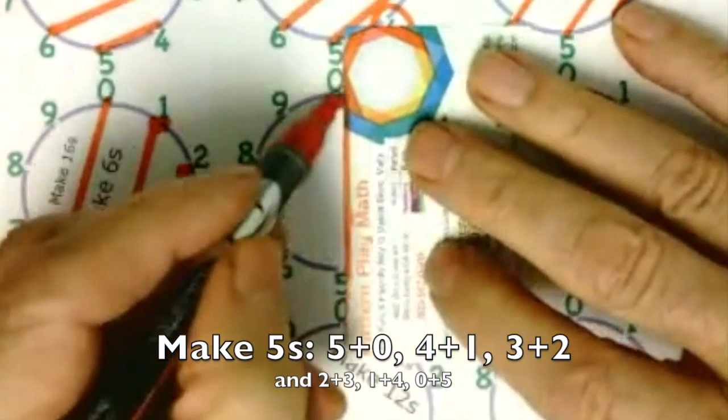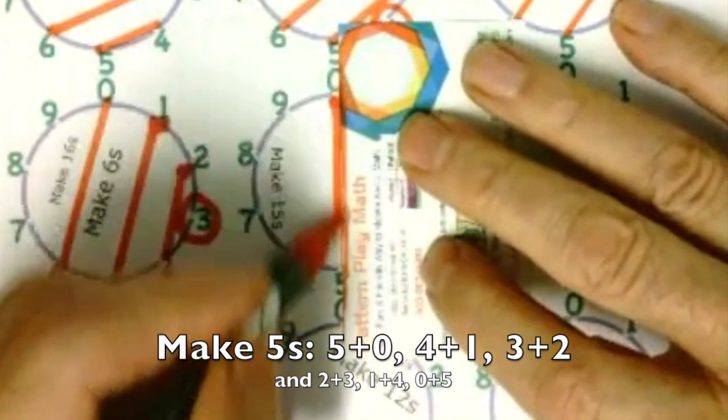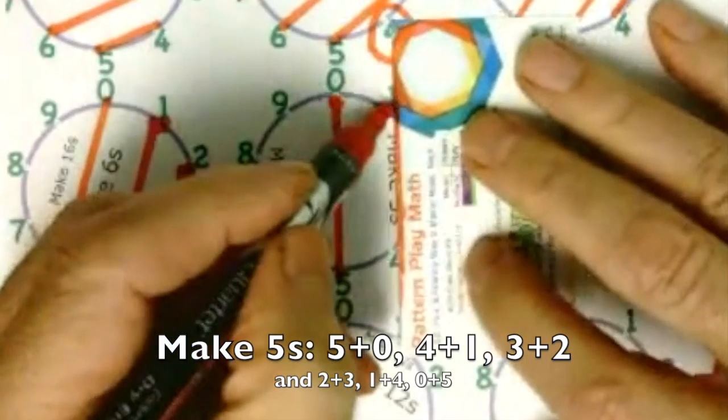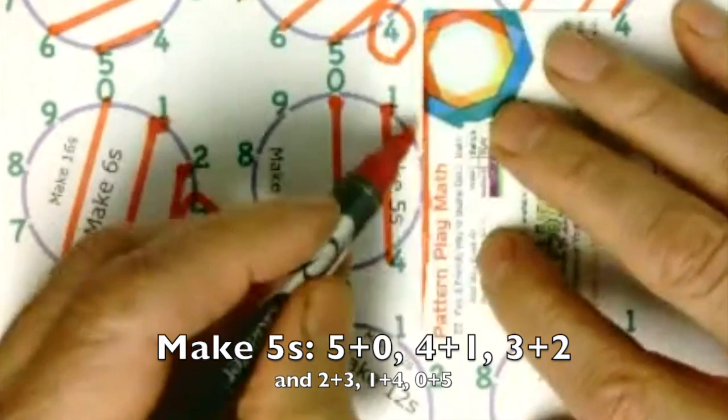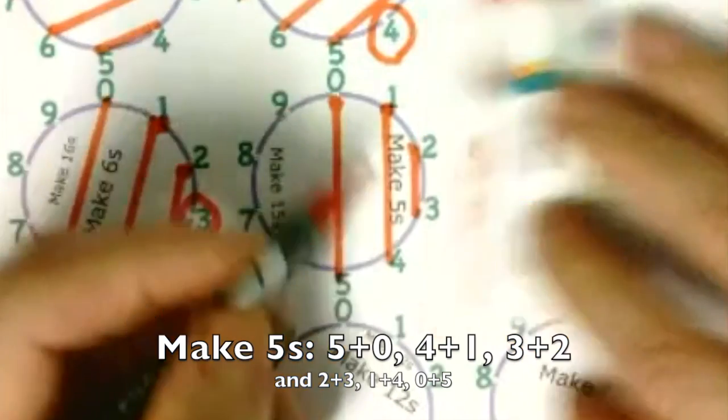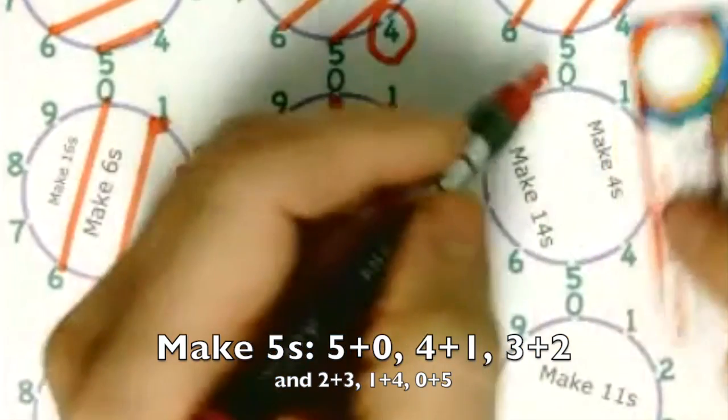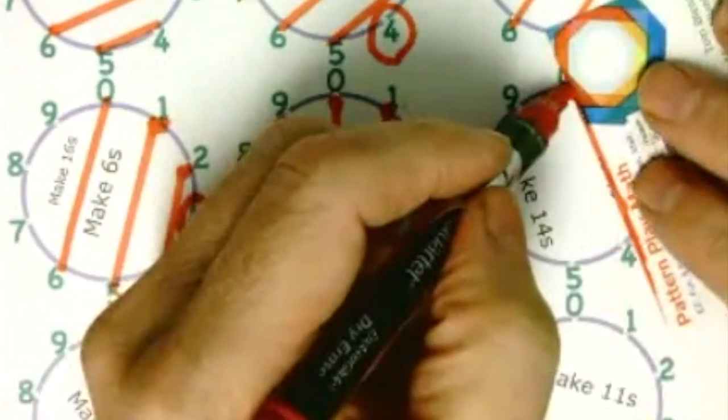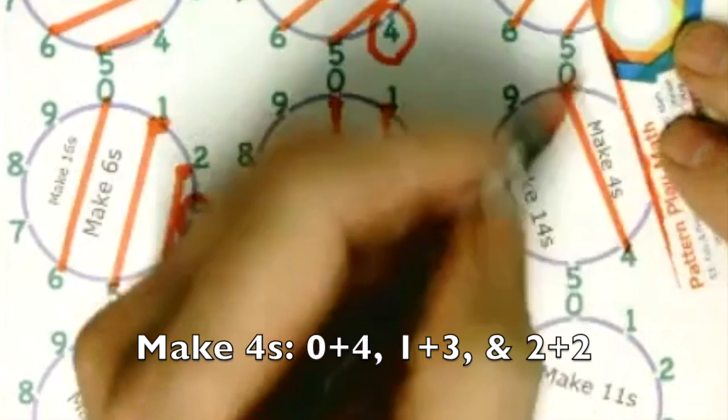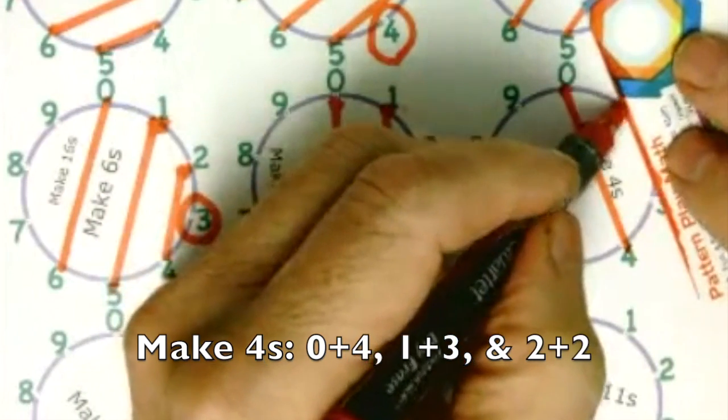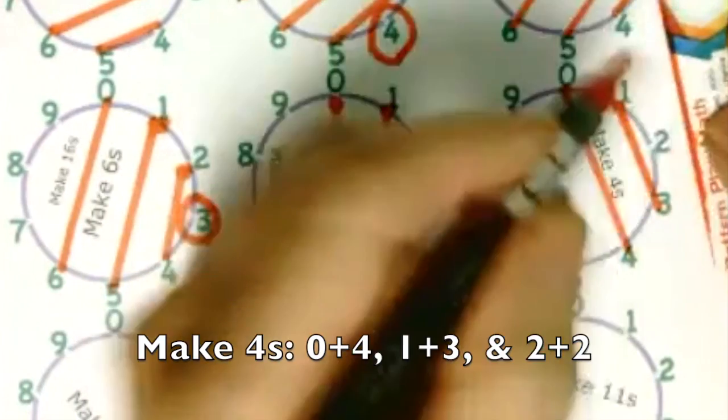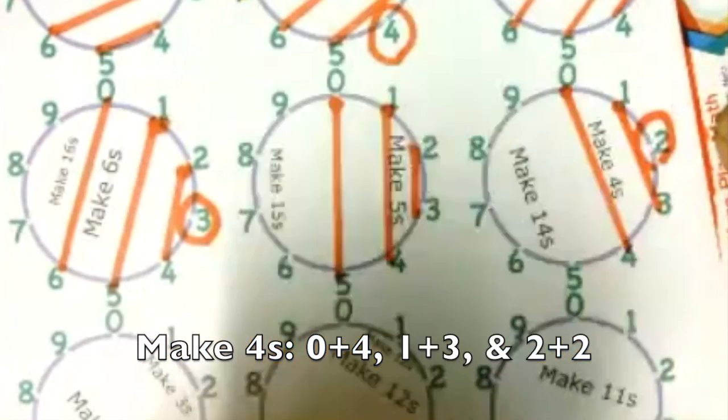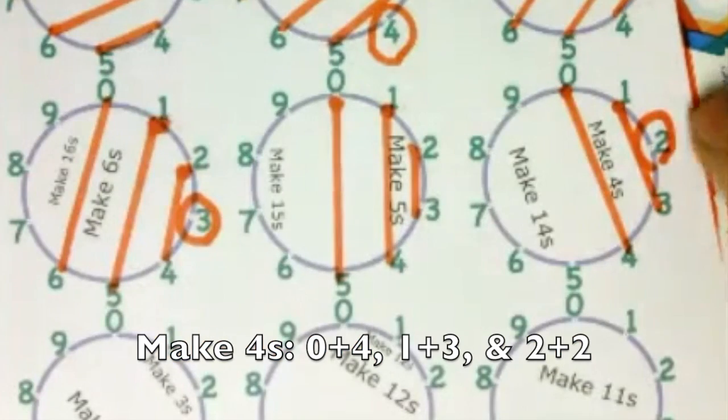And we did 5s before, so we'll do them again. 0 and 5, 1 and 4, and 2 and 3 all make 5. And now we'll do 4s. 0 and 4, and 1 and 3 make 4. And 2 is all by itself. And we circle that. And we've got 2 and 2 are 4.